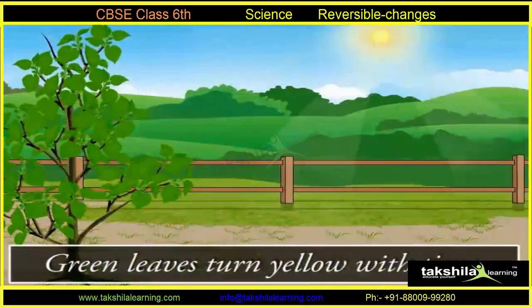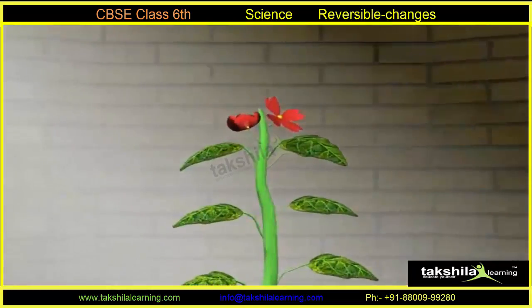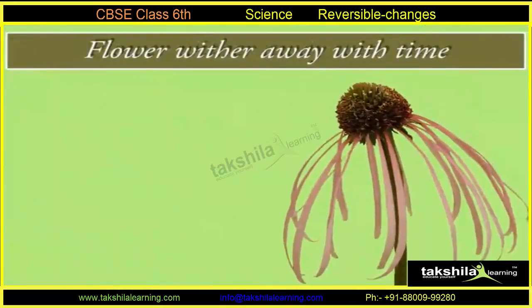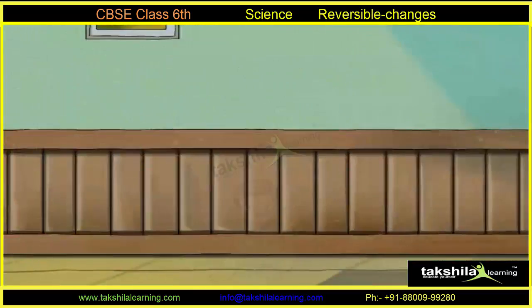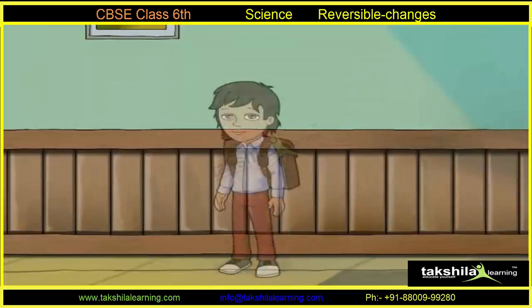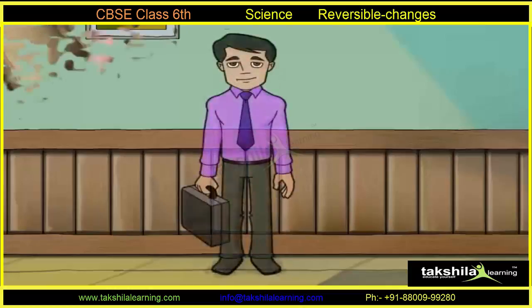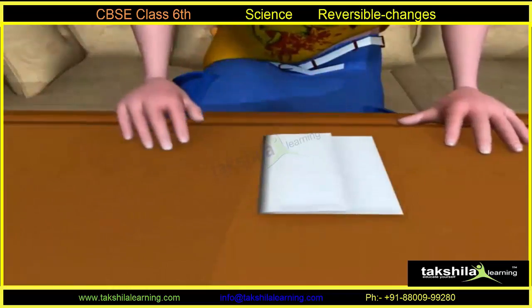Leaves of the trees change color with time. The flowers bloom and then wither away with time. You grow taller and your weight increases as you grow. So many changes are taking place around you all the time.